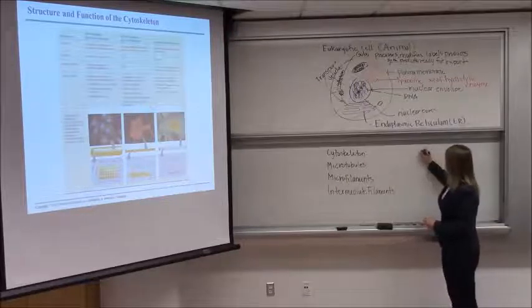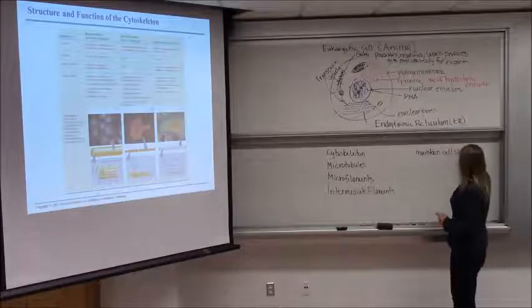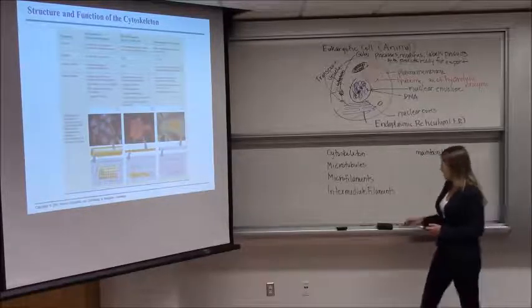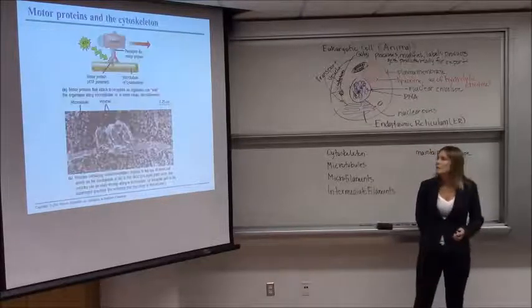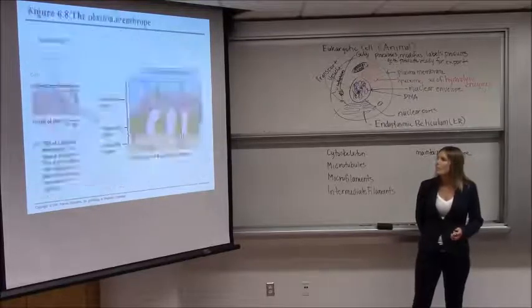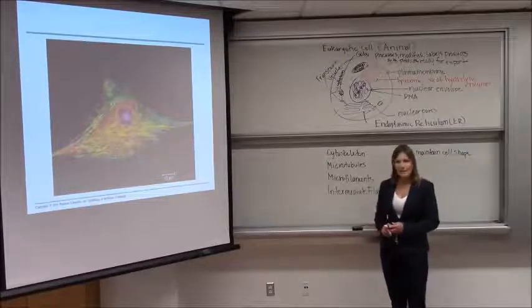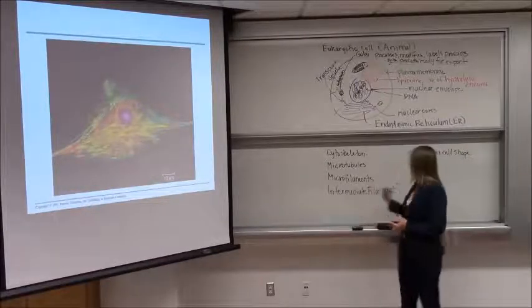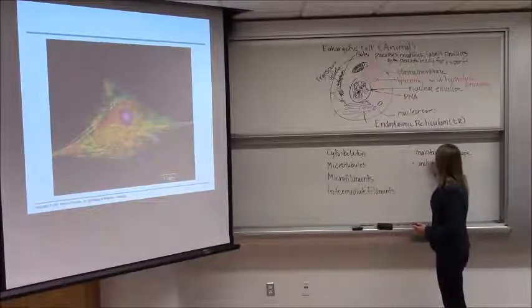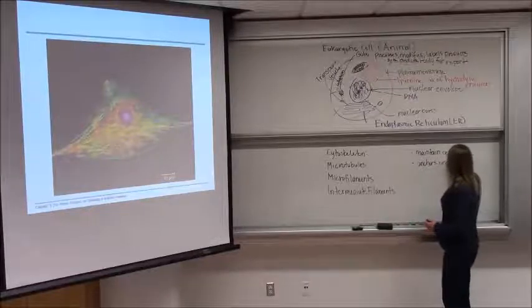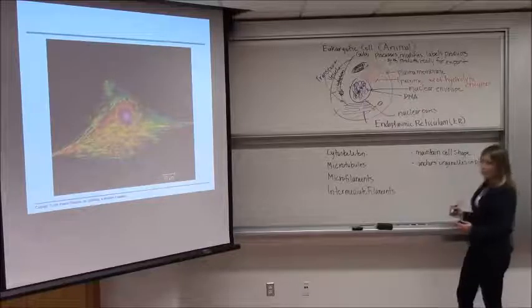The cytoskeleton gives the cell shape. So it maintains the cell shape. Otherwise, it would be just a gelatinous blob. But instead, if we go back to that very first slide, you can see that that cell has a definite shape because of the cytoskeleton. It anchors organelles in place. So they're not just free-floating. They're anchored to components of the cytoskeleton.